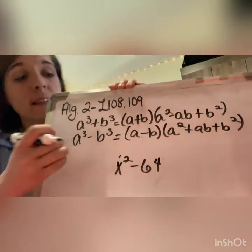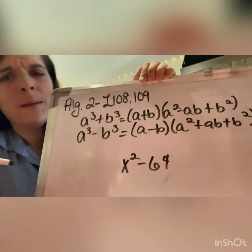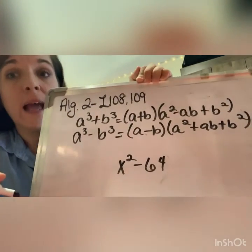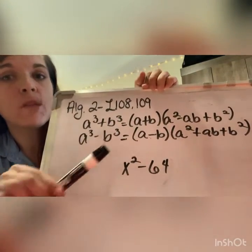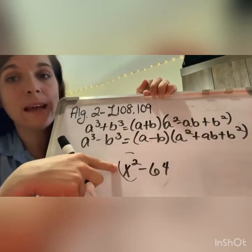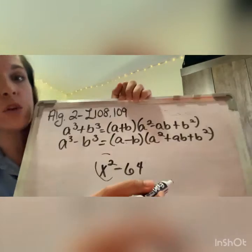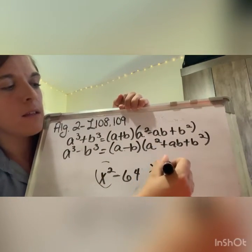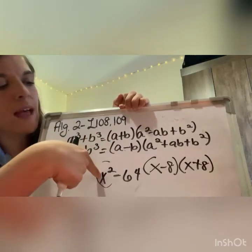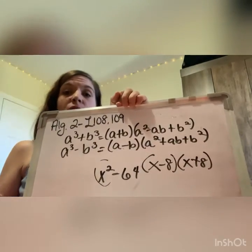Look at this one right here: x squared minus 64. This is the difference of two squares. If you can recognize — and maybe this is already stuck in your head — that if you have a perfect square here and a perfect square here, meaning you can take the square root of x, and take the square root of 64, that's 8. So x minus 8 and x plus 8. That's how you factor out the difference of squares.